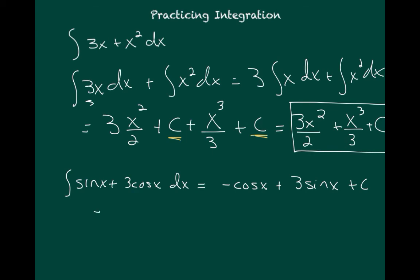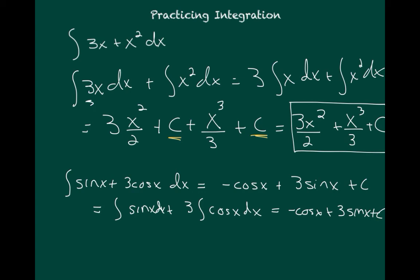Suppose we have the integral of sine x plus 3 cosine x. You could do this all in one step: the integral of sine x is negative cosine x, plus 3 times sine x, plus c, and you'd be done. Or if you wanted to, you could break it up into two separate integrals and take the constant 3 out of the second integral — you'd get the same answer either way. One approach is just a little bit fewer steps.